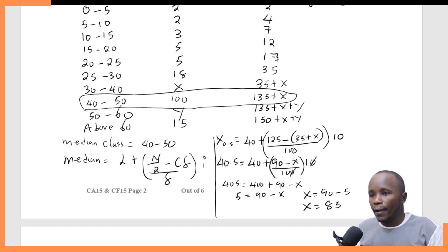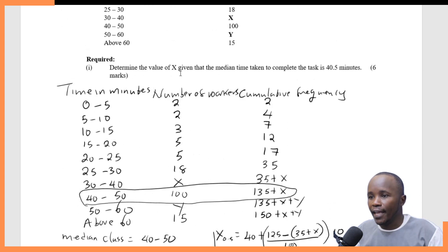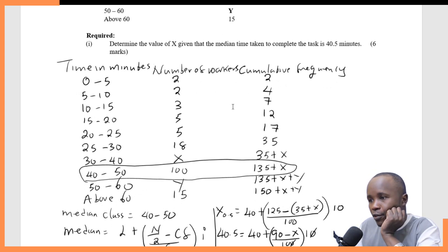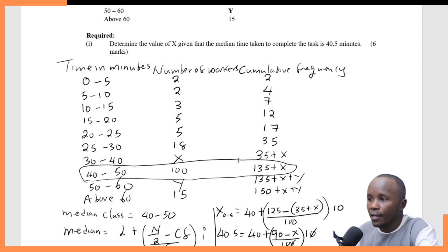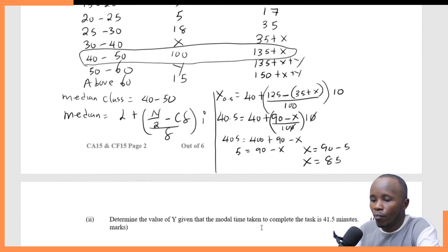Good. At that point we are able to find X. So in this question, you needed to identify the median class first. Once you identify the median class, you know that the median is the same as the second quartile, and you work out using the formula for the second quartile so that you can find X. Now let me move to the next question.